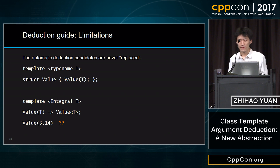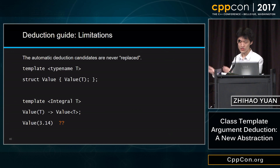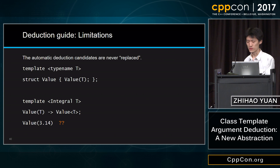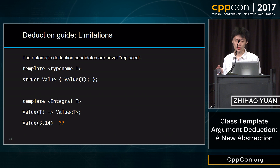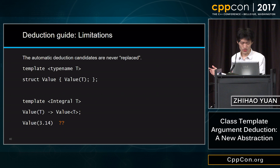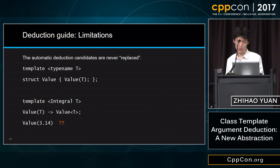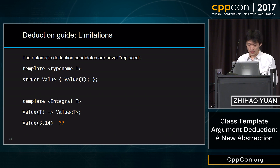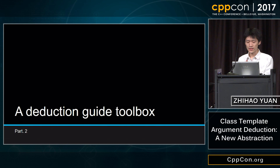We can fix the ambiguity by adding constraints on the deduction guide — specifically, I constrain the allocator to satisfy the allocator concept. This deduction guide is more constrained than the second constructor, so it takes priority, and the last line compiles. The next tool in our toolbox is about how to exactly write a deduction guide, because there are some special things going on in deduction guides that can make your life easier.